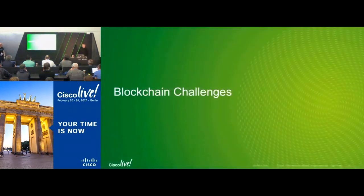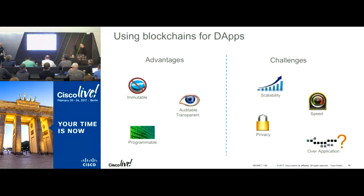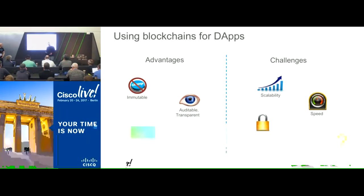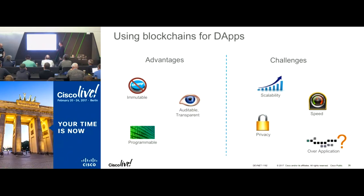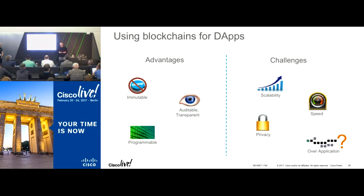So we've talked about how great it is — it's immutable, auditable, transparent, programmable — but why does it suck? What are the problems? One is scalability issues. Visa can do a certain number of transactions per second, and compared to what Bitcoin can do, it dwarfs it. Then there's the speed — how fast can these transactions be validated? That's some of the concern in the Bitcoin community, and why last year they were talking about forking Bitcoin because it wasn't transacting fast enough.